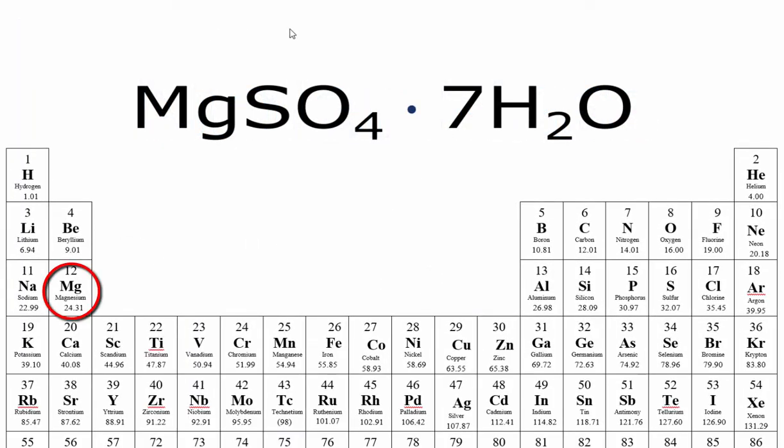For magnesium, we have 24.31 grams per mole. Sulfur is 32.07, oxygen is 16.00, hydrogen is 1.01, and oxygen is 16.00.